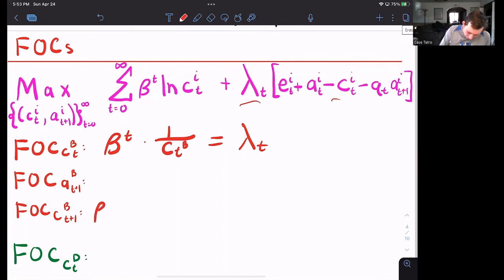And we know that Bill's consumption tomorrow is going to follow a similar pattern. It's just going to be shifted over one period. So here's his first order condition for his consumption tomorrow.